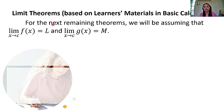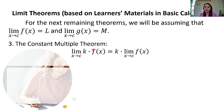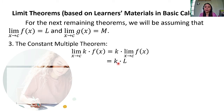For the next remaining theorems, we will assume that the limit of F of X as X approaches C is equal to L, and the limit of G of X as X approaches C is equal to M. Number 3: the constant multiple theorem. The limit of K times F of X as X approaches C is equal to K times the limit of F of X as X approaches C, which is also equal to K times L.